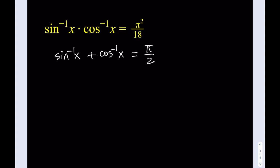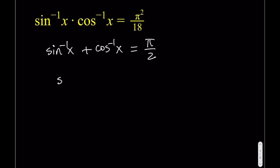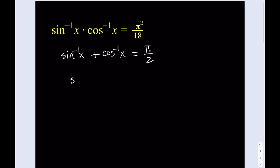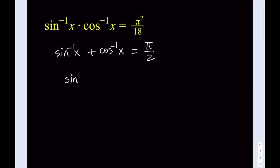Why? Because if you think about two complementary angles — the angle whose sine is x and the angle whose cosine is x — they're going to be complementary angles. You can draw a right triangle and see that this is true. Now this allows me to replace sine inverse with something else, so I'm going to isolate sine inverse of x and write it as pi over 2 minus cosine inverse of x.